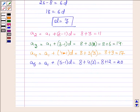And now let us find the last number which is A6. Its formula will be A1 plus 6 minus 1 into D. So we have 8 plus 5 into 3. This is equal to 8 plus 15. This is equal to 23.